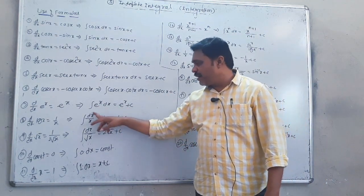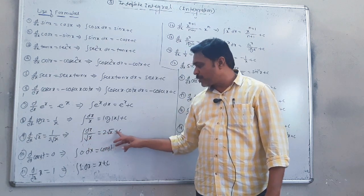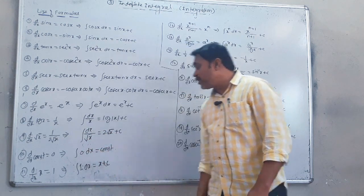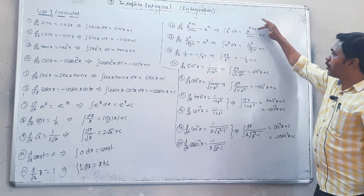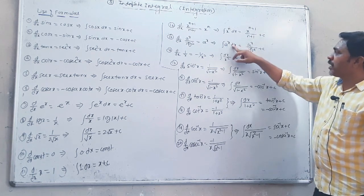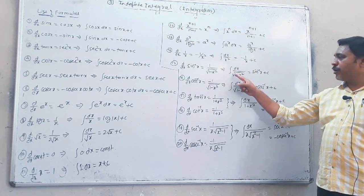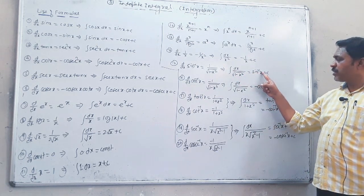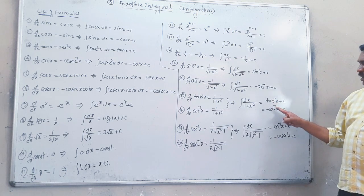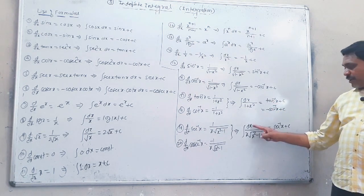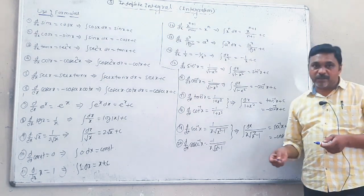e to the power x: integral equals e to the power x plus c. Integral of dx upon x equals log of mod x. Integral of dx upon root x equals 2 root x plus c. Integral of 0 is constant. Integral of 1 equals x plus c. Integral of x to the power n equals x to the power n plus 1 upon n plus 1 plus c. Integral of dx upon root of 1 minus x squared equals sin inverse x plus c and minus cos inverse x plus c. Integral of dx upon 1 plus x squared equals tan inverse x plus c and minus cot inverse x plus c.